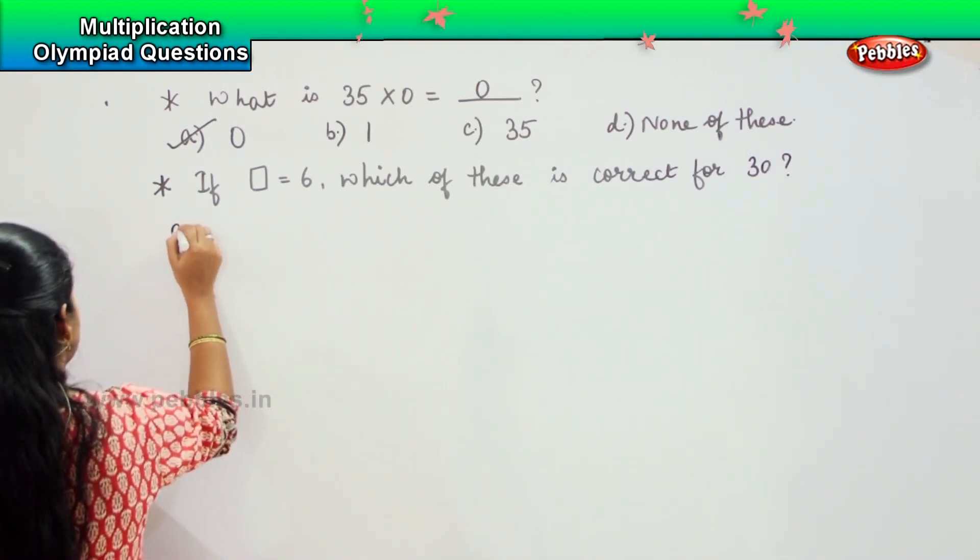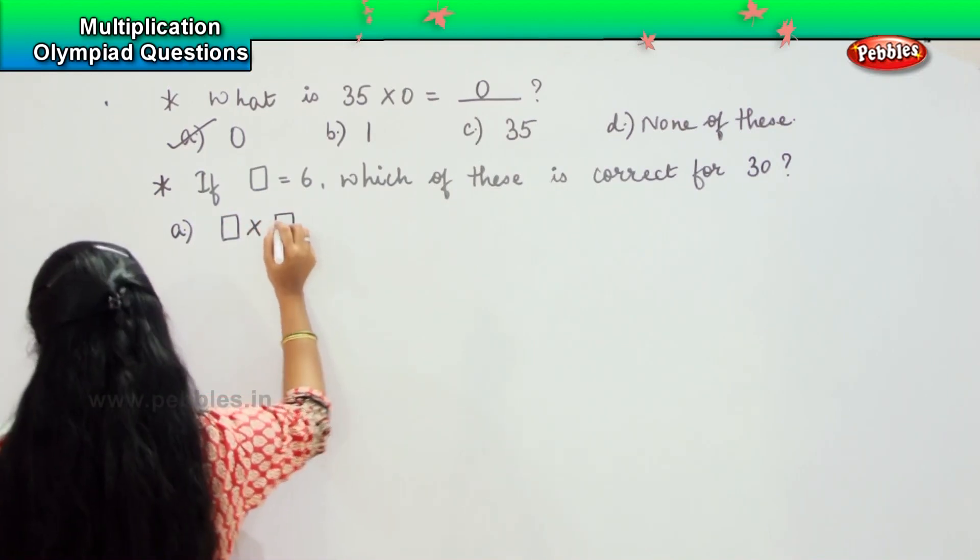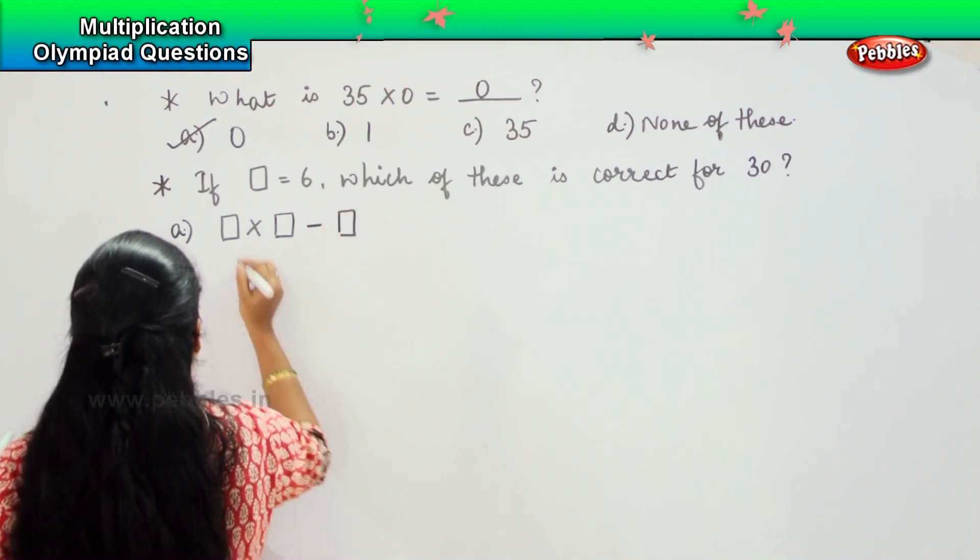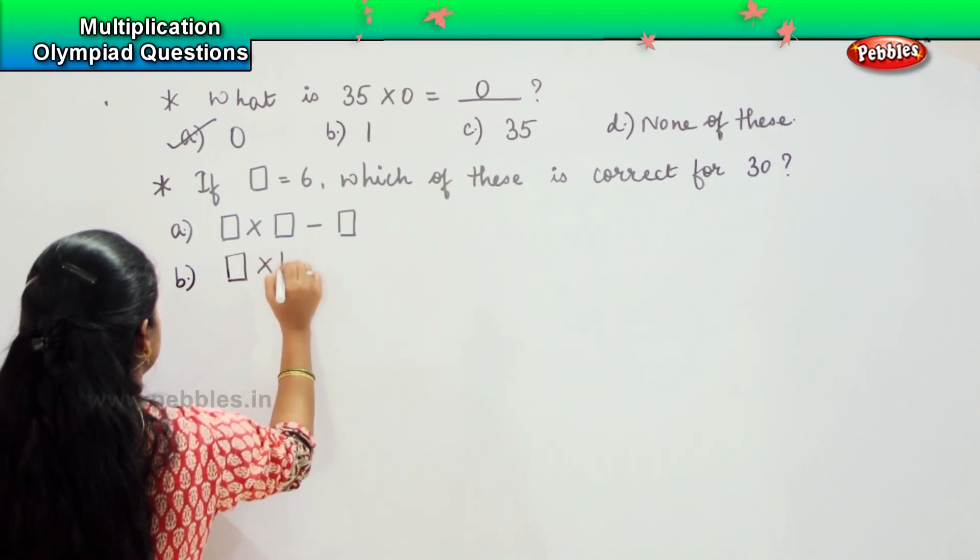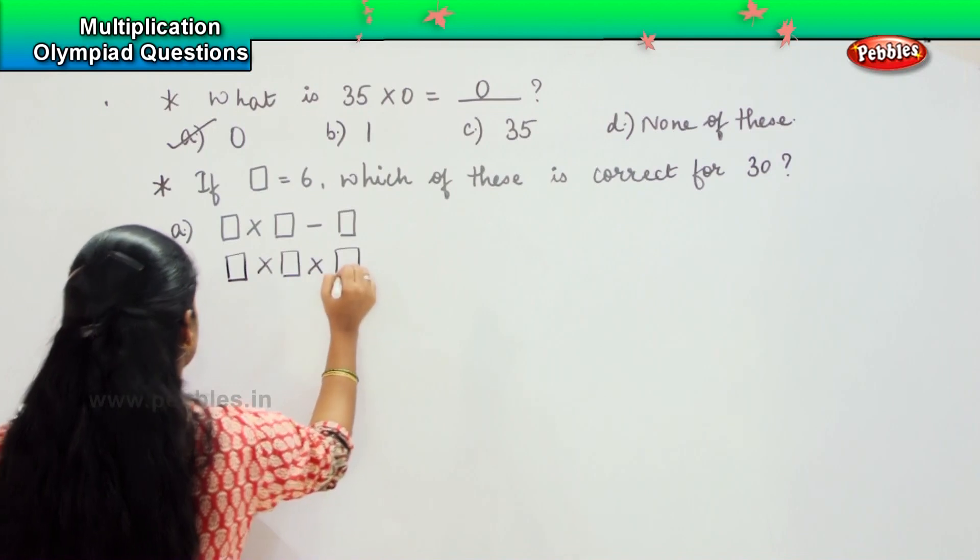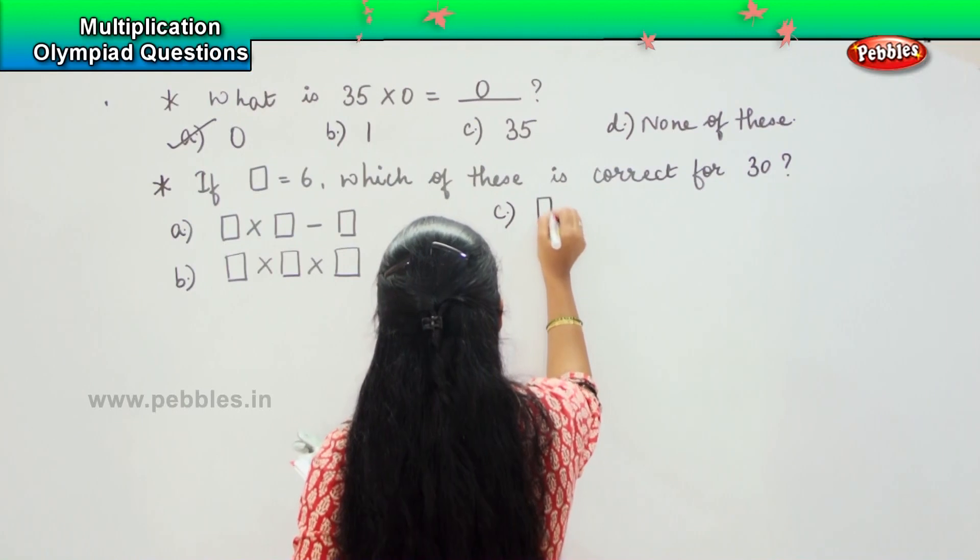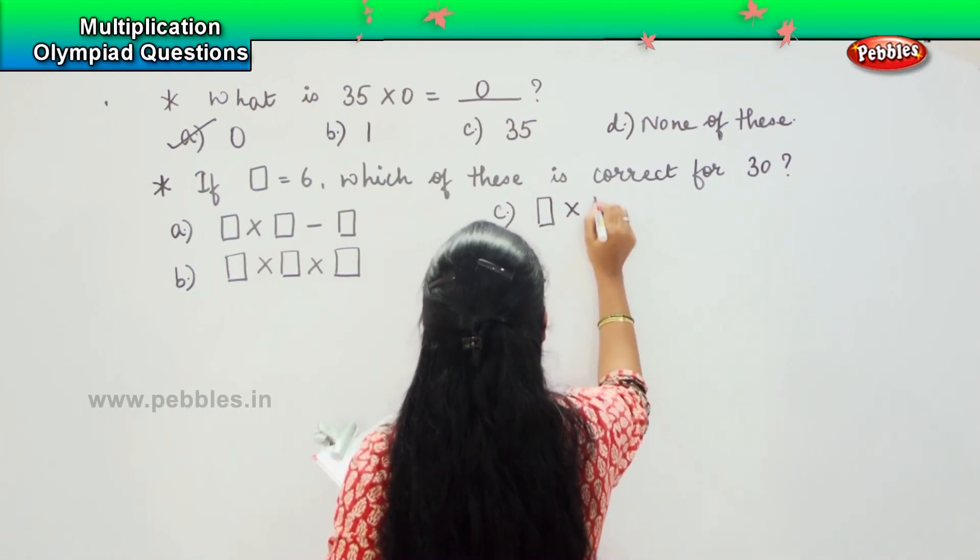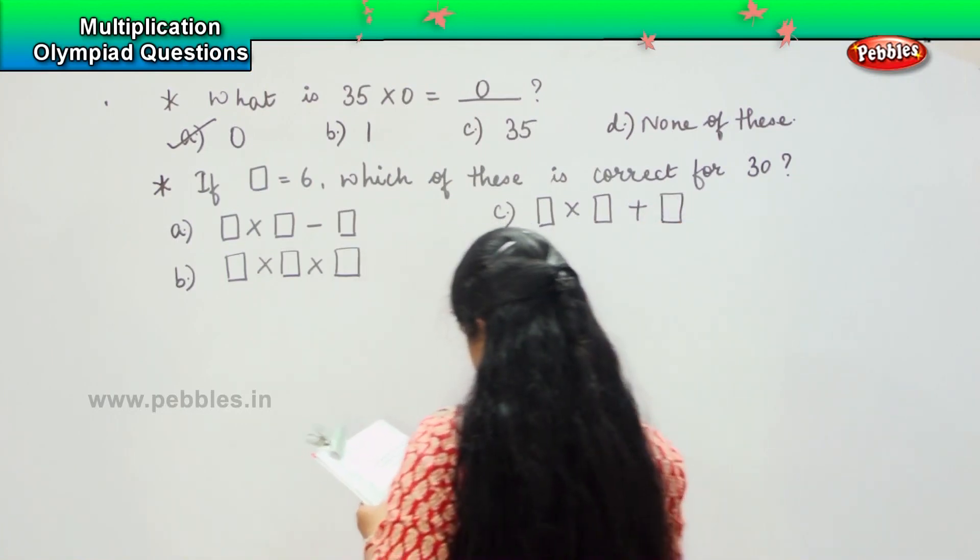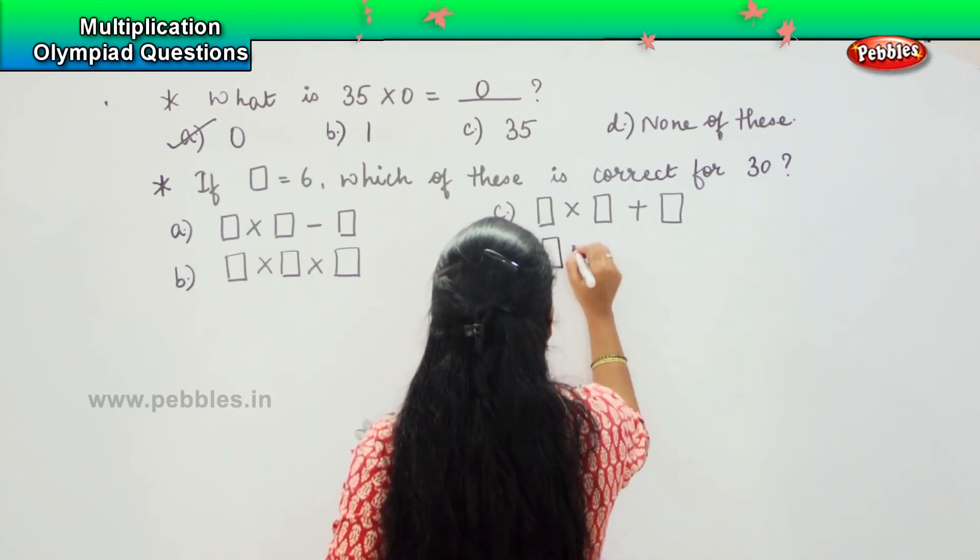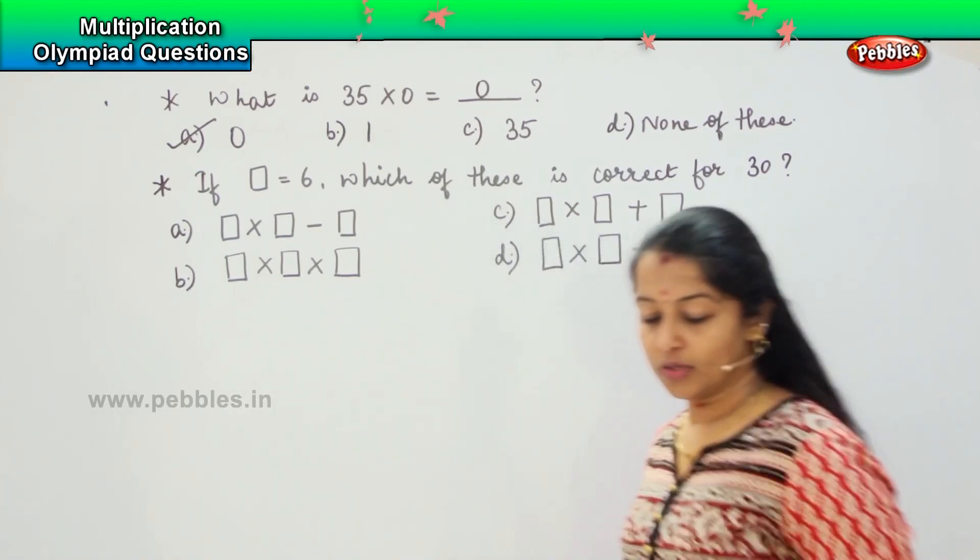Your first option is square into square minus square. Option B is square into square into square. Option C is square into square plus square. Option D is square into square minus square.